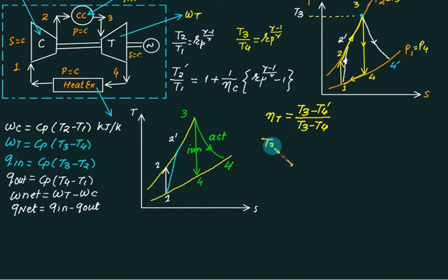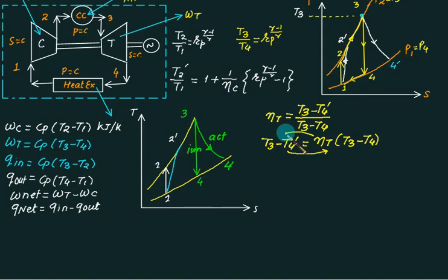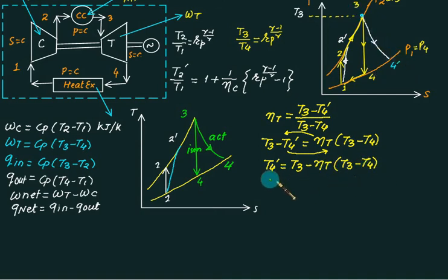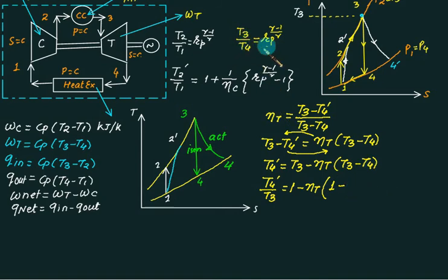Rearranging the turbine efficiency equation: T3 - T4-dash equals eta_t multiplied by (T3 - T4). Solving for T4-dash gives T4-dash equals T3 minus eta_t multiplied by (T3 - T4). Dividing through by T3, we get T4-dash over T3 equals 1 minus eta_t multiplied by (1 - T4/T3), where T4/T3 equals 1 over rp to the power (gamma-1)/gamma.